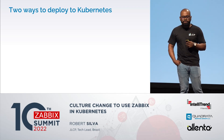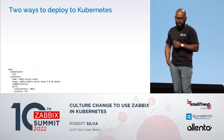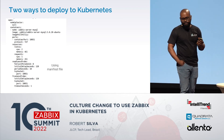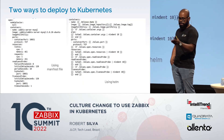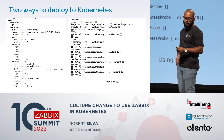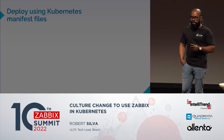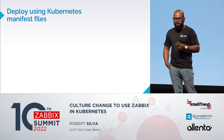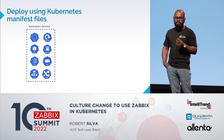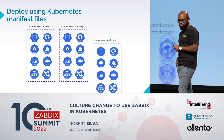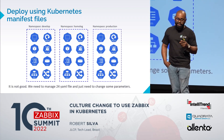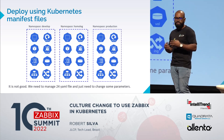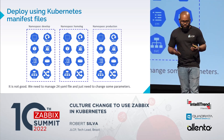There are two ways to deploy to Kubernetes. You can use manifest files — simple YAML files — or you can use Helm. When deploying with manifest files, you need to write separate files for development, homologation, and production environments. But this is not ideal, because you're only changing parameters but have to manage several files.